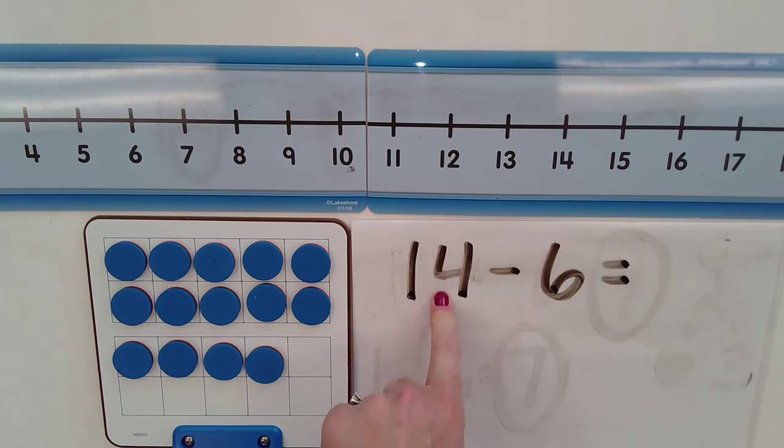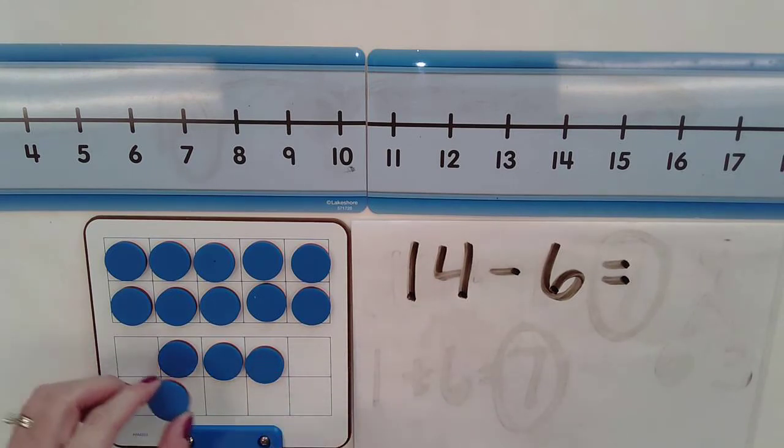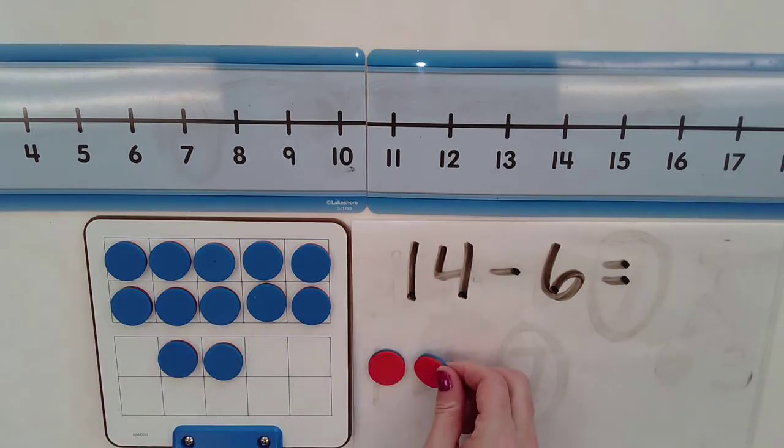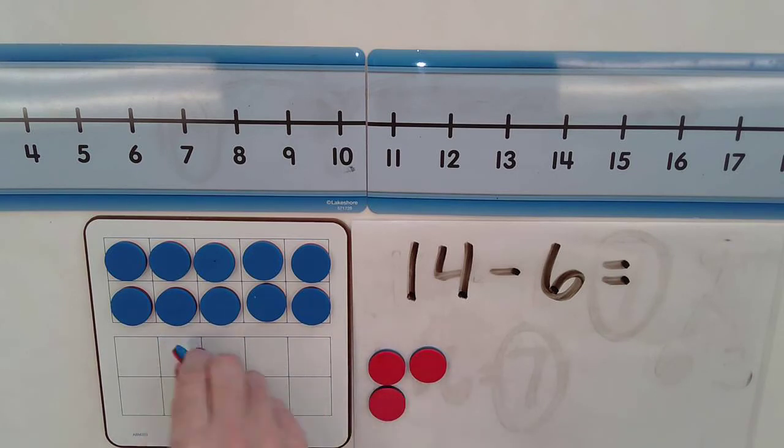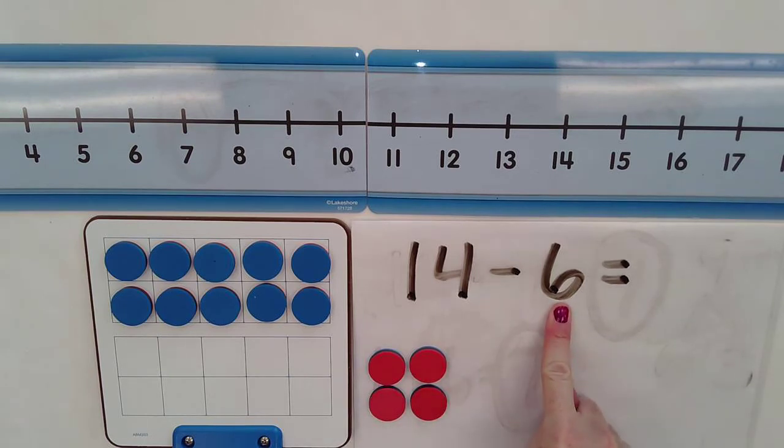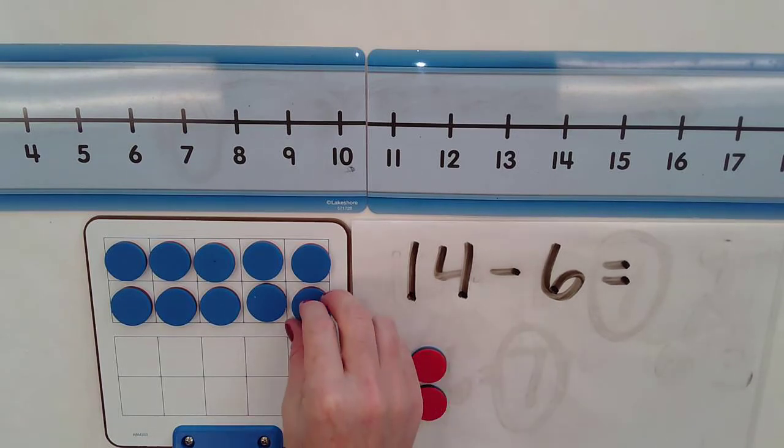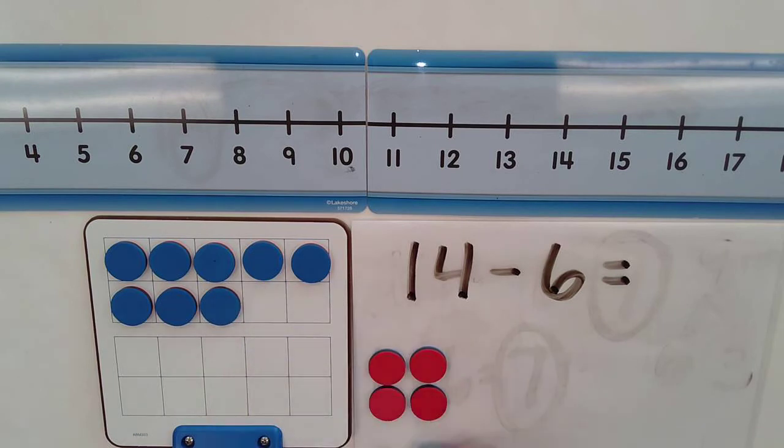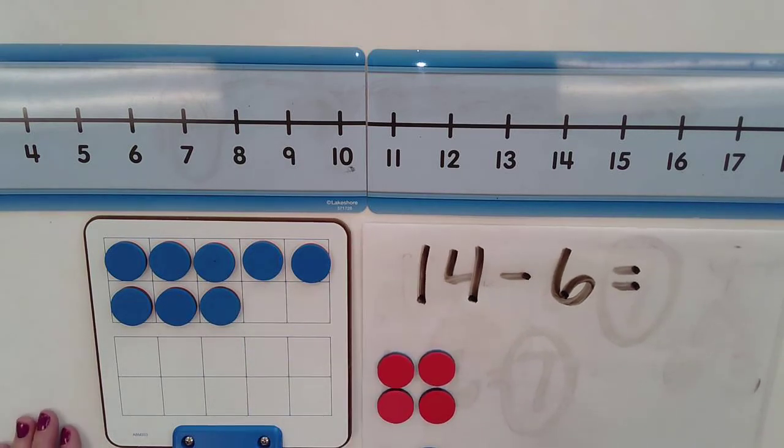So now I'm going to take away the 4, which leaves me with 10. So I know in order to take away the total of 6, I have to take away 2 more, which leaves me with 8.